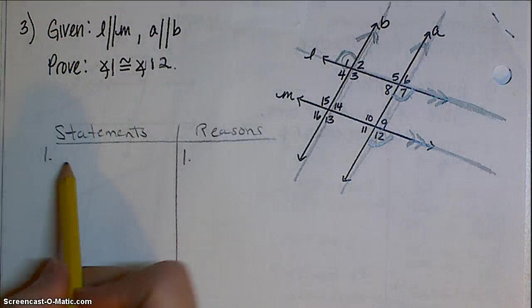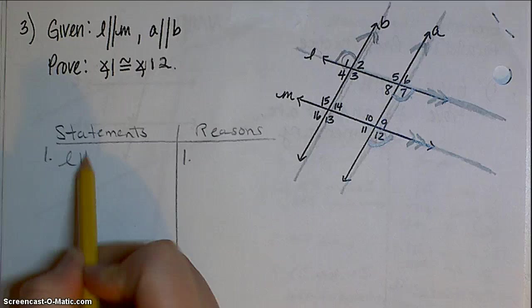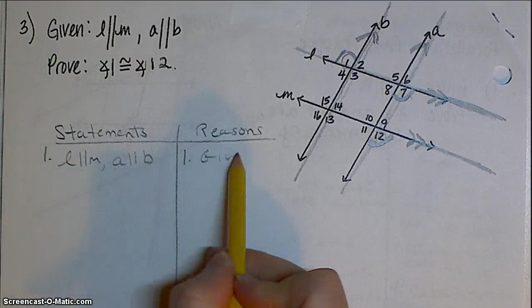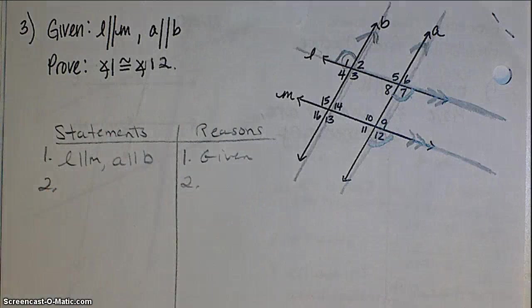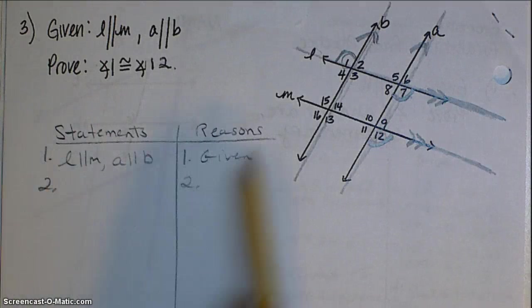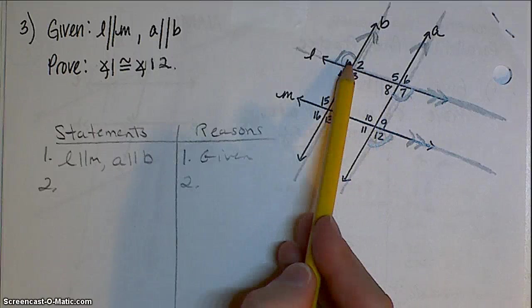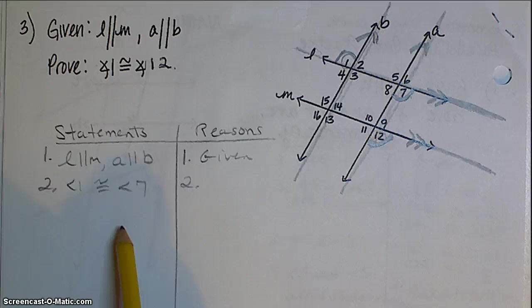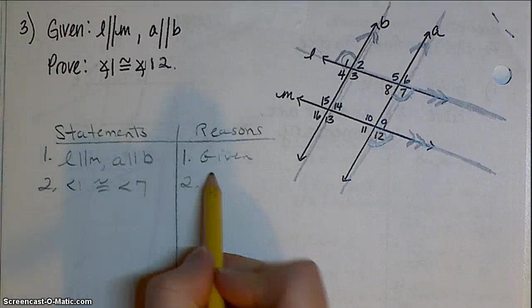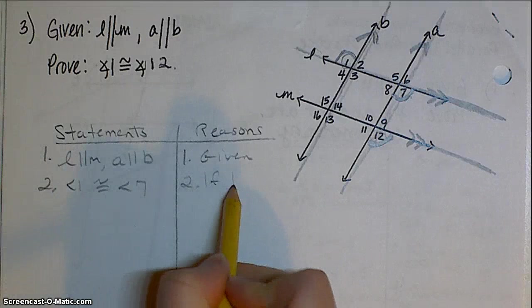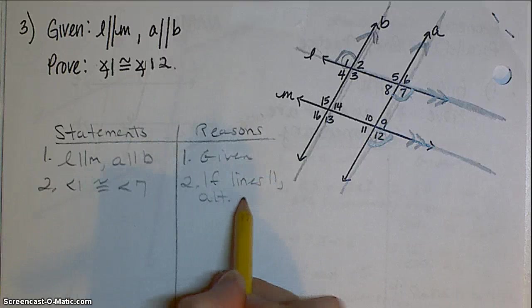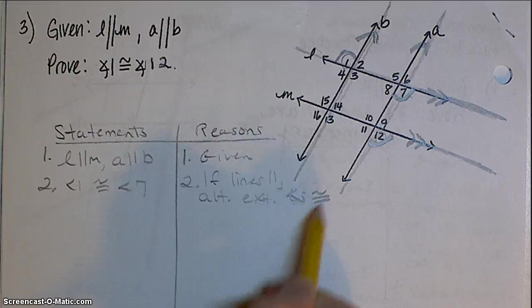Now I go to my proof. So I start with the given. Then I start listing out the steps that I brainstormed in my game plan. So first I said 1 and 7 are congruent, because if lines are parallel, alternate exterior angles are congruent.